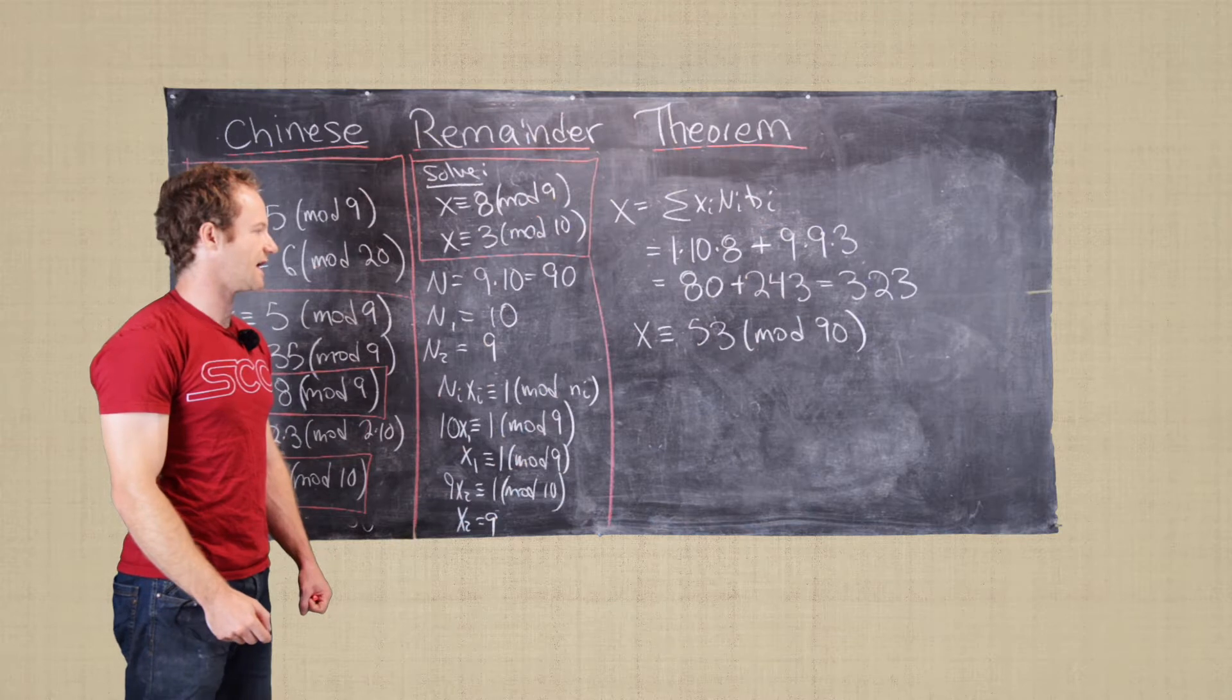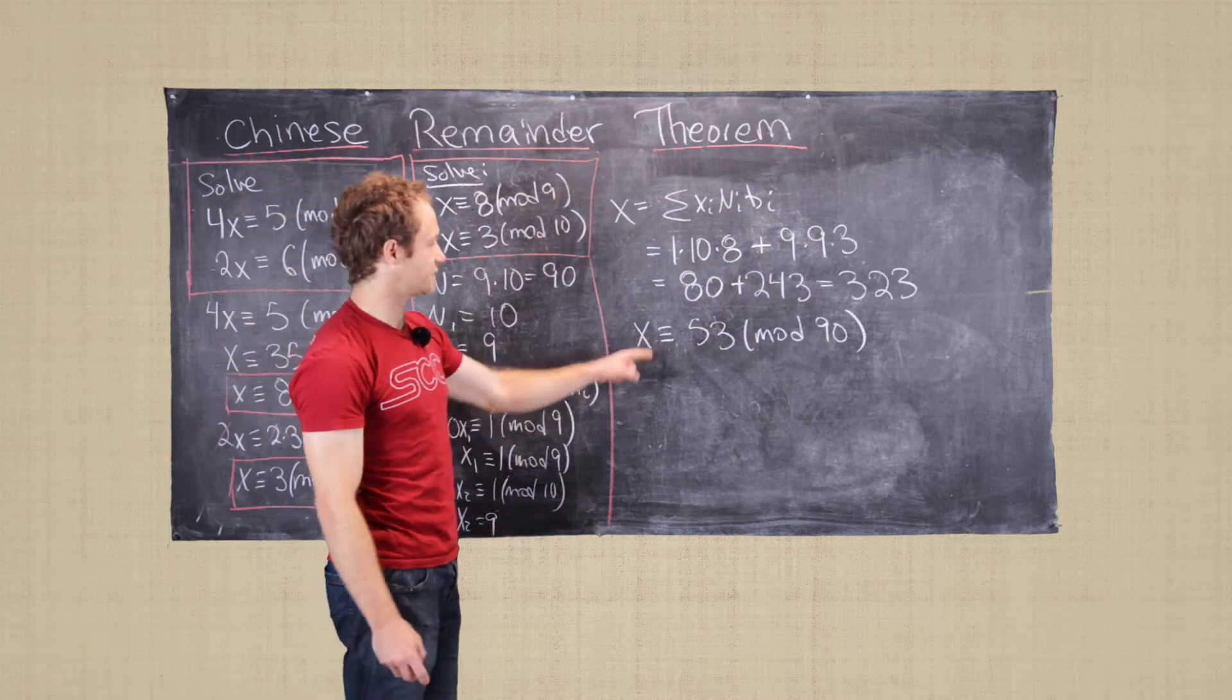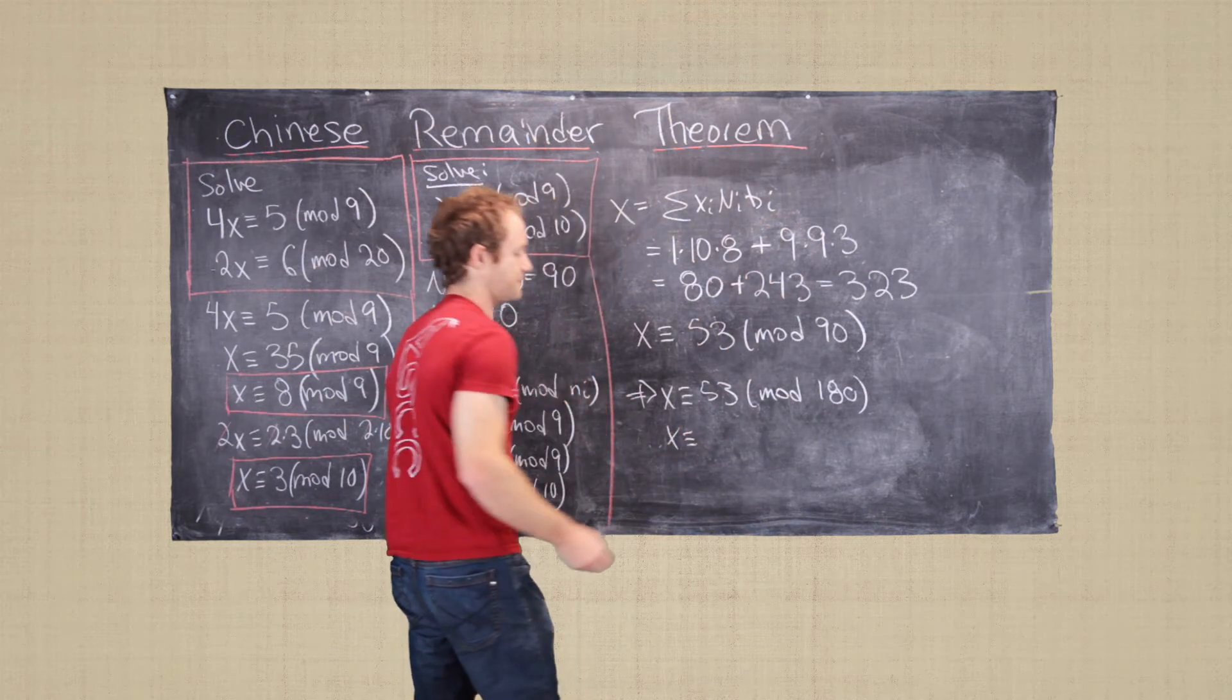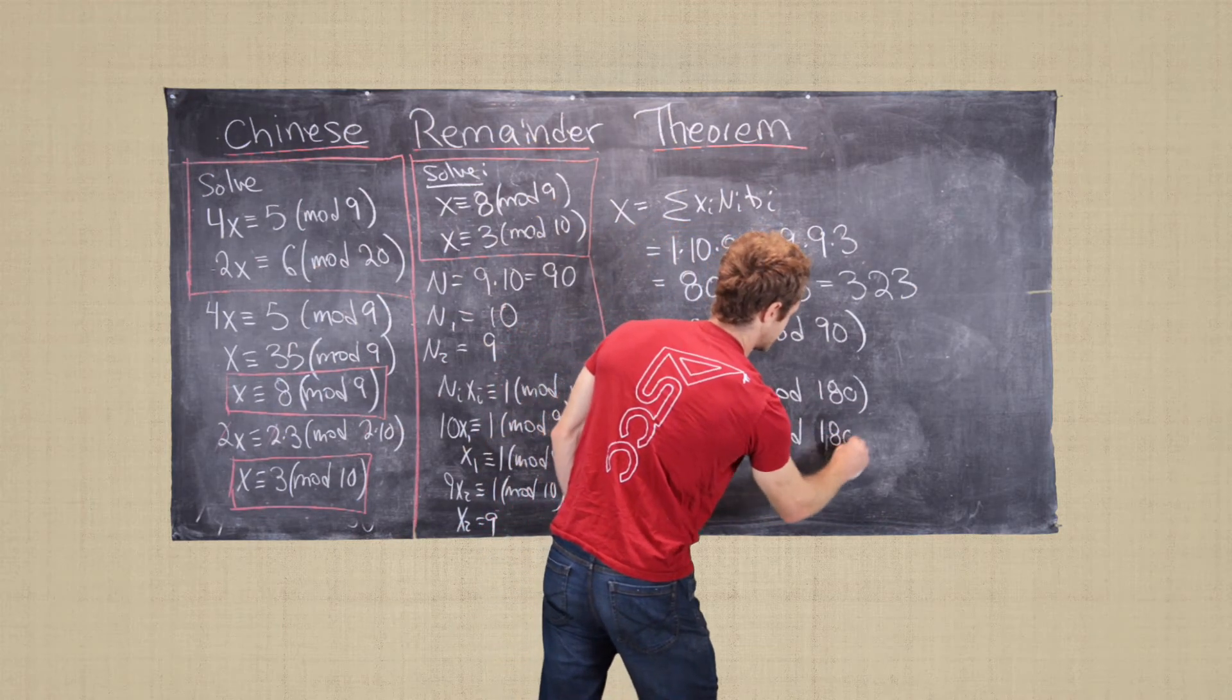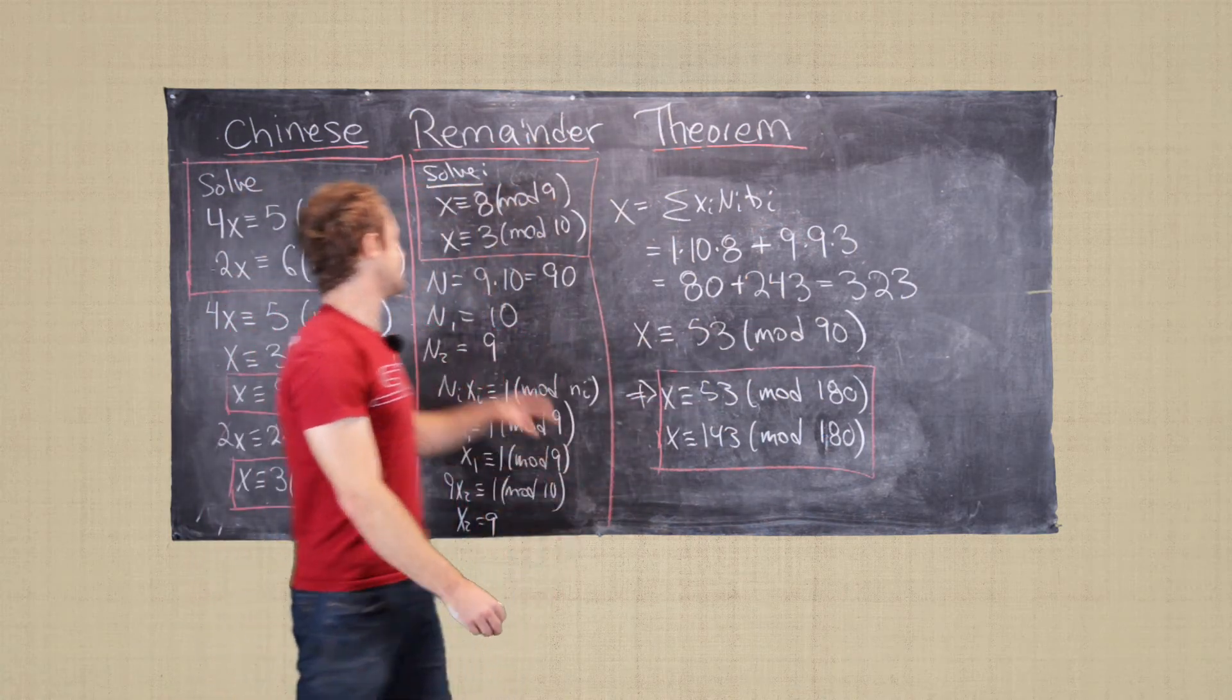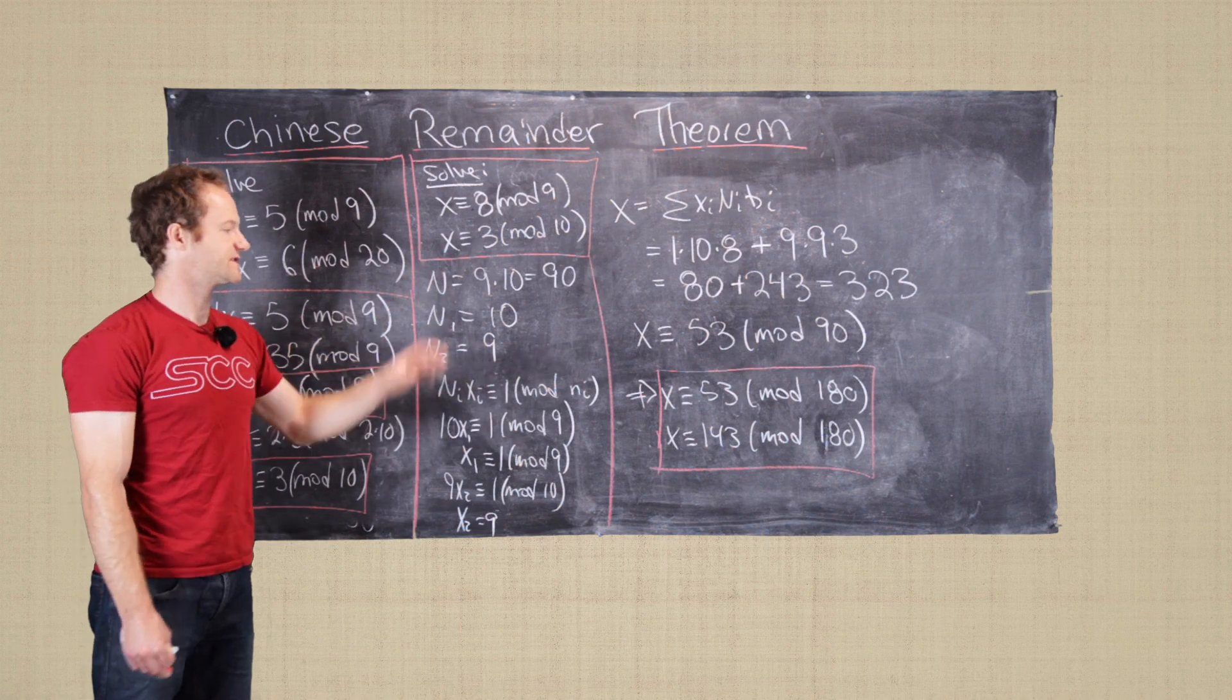So we have a unique solution mod 90, but we want to solve this maybe mod 180 because that's the product of these two. And so we can do that. And that means we have two solutions. We have x is congruent to 53 mod 180. And then we can add 90 to this, and we get also this is 143 mod 180. So now we have these two solutions. So we have one solution that's unique mod 90 by this trick, but we have two solutions if we're looking at equivalence mod 180, which is the product of these two numbers. So this is the final solution.